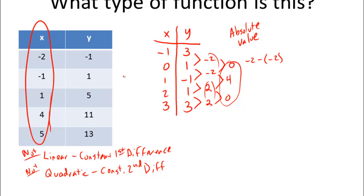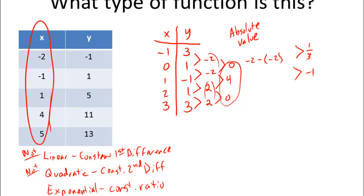Now I'll check for exponential — remember, exponential has a constant ratio. So: 1 divided by 3 is one-third; negative 1 divided by 1 is negative 1; 1 divided by negative 1 is negative 1; and 3 divided by 1 is 3. The ratio is not constant, so it is not exponential. This confirms the function is absolute value. Hopefully that gives you an idea of what's going on. Make sure you understand each of these and are able to apply them, because that's what we're going to do in class.